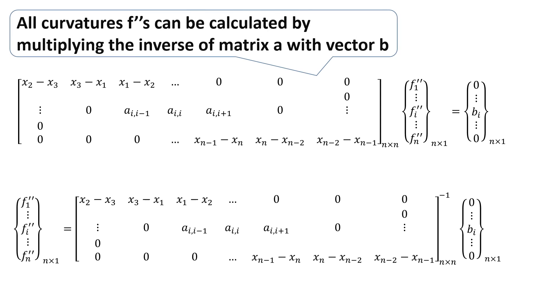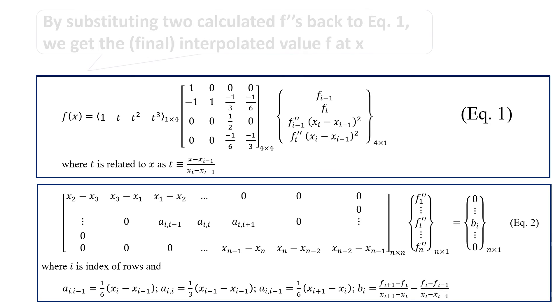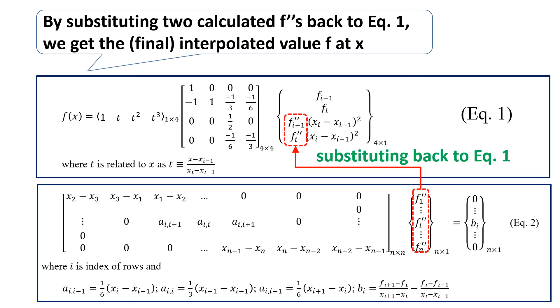All curvatures can be calculated by multiplying the inverse of matrix A with vector b. By substituting two calculated f'' values back to equation 1, we get the final interpolated value f at x.